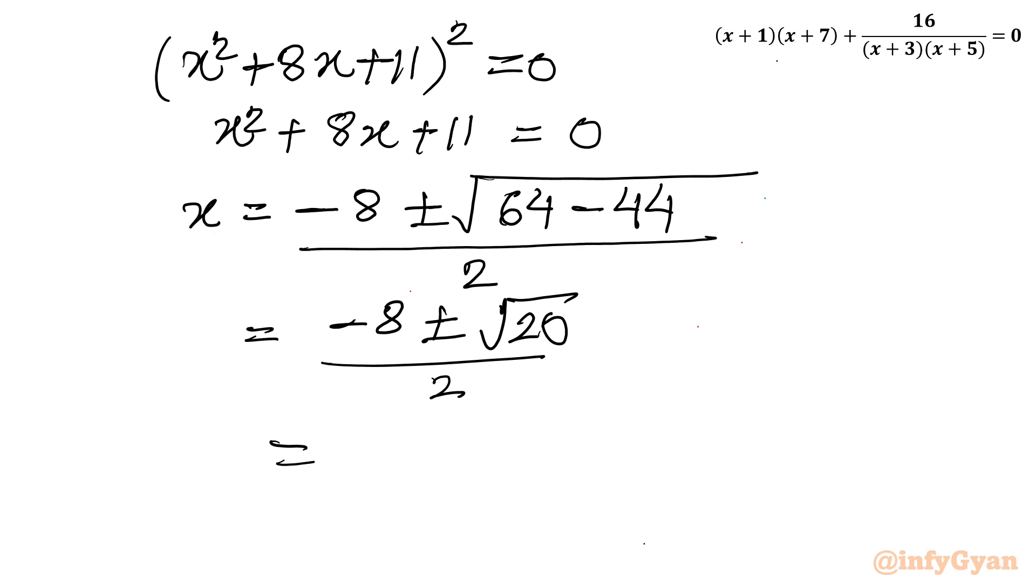So I can write minus 4 plus minus, it is 2 root 5 and that 2 I will cancel with the denominator 2. So I will write root 5.